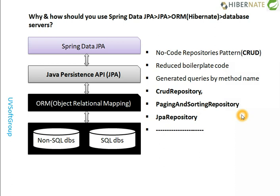If you use the boilerplate code approach with JDBC, you need to manage all connection costs and pooling. But with the latest technology like Spring Data JPA, you don't need to manually open and close connections or write boilerplate code. You can also generate queries by method names — I'll show you those things in detail.